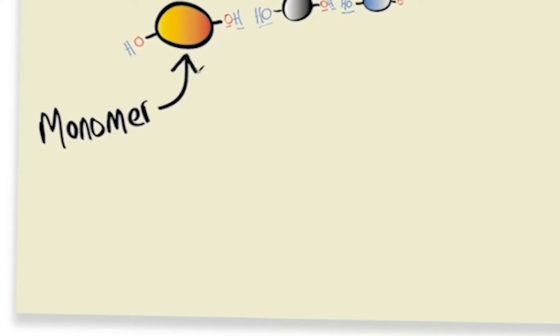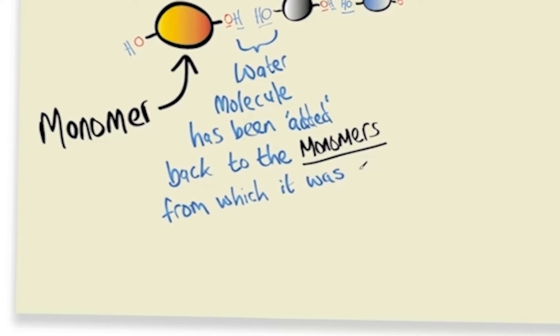So here we can see each individual monomer being created, and we can see that a water molecule has been added back to the monomers from which it was removed. Hydrogen onto one monomer, hydroxyl onto the other monomer.